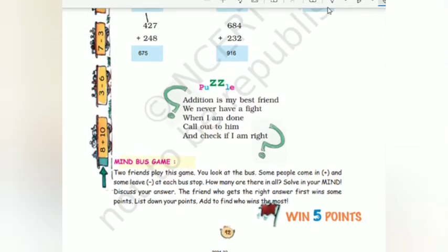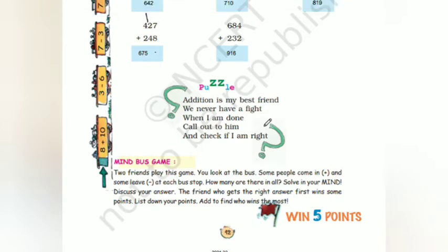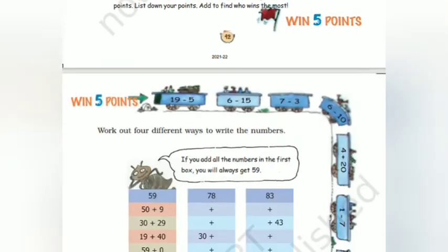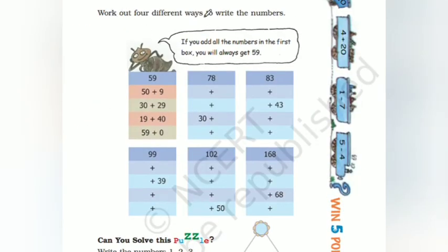Addition is my best friend - we never have a fight. When I am done, I call out to him and check - I am right! So addition is the best friend; they never fight. After doing addition and checking, they put the right answer. Win 5 points: some subtraction is given. Work out 4 different ways to write the answers. To get 59: 50 plus 9 is 59, 30 plus 29 is 59, 19 plus 40 is 59, and 59 plus 0 is 59.